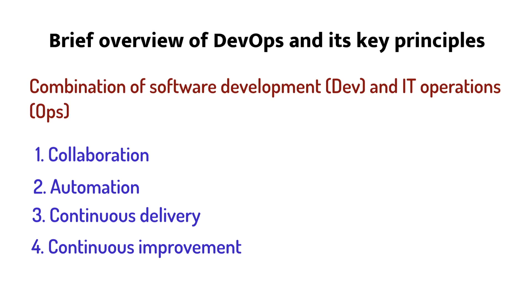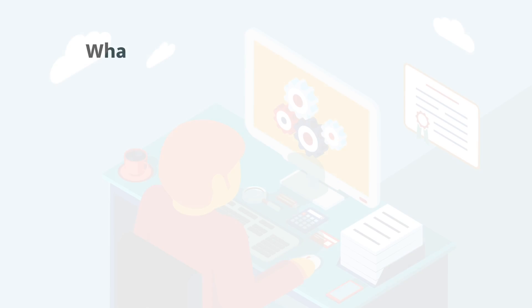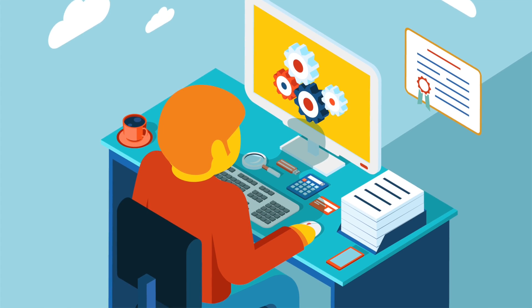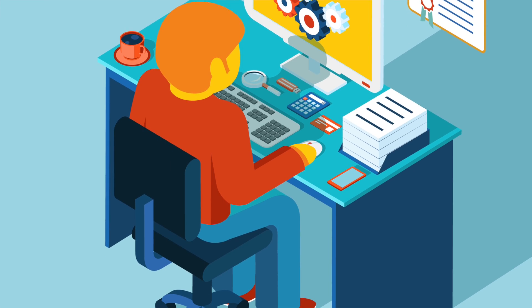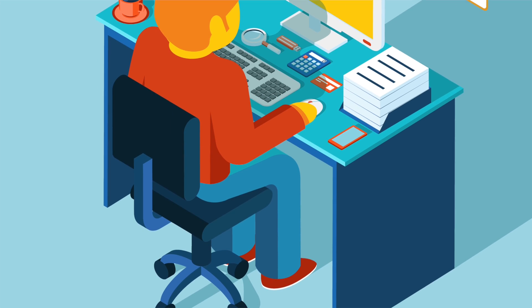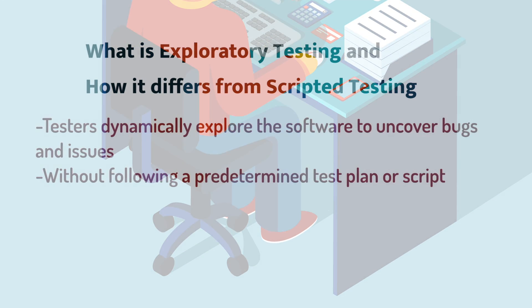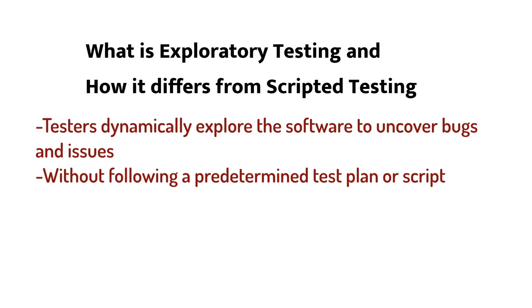Continuous improvement: DevOps is a culture of continuous improvement where teams are encouraged to experiment, learn from mistakes, and refine the process over time. By seeking out opportunities for improvement and making incremental changes, teams can deliver higher quality and sustainable software. Exploratory testing is a testing approach where testers dynamically explore the software to uncover bugs and issues without following a predetermined test plan or script. The tester has a general idea of what needs to be tested but not a detailed test plan, allowing them to adapt to the changing needs of the software being tested.